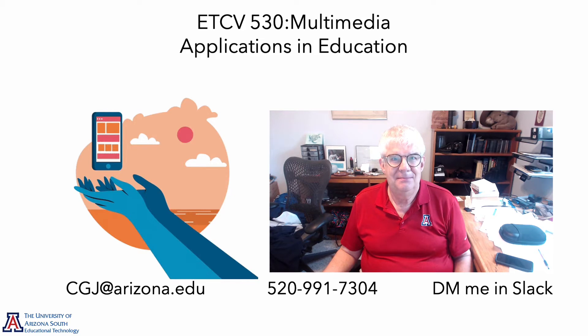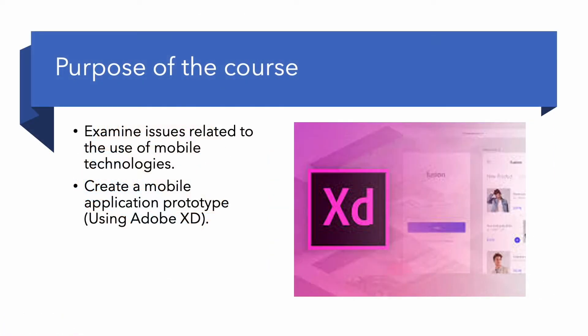Let's take a look at the course. How can you design mobile learning? How can you use principles such as universal design for learning? We'll get into all of that as you go through some readings and watch some videos, and we'll do some discussions in our weekly meetings on these topics. But the main focus of the course is for you to actually develop a mobile application prototype, and we'll be doing this using a tool called Adobe XD. You have access to Adobe XD through Creative Cloud — instructions are in the course, but if you have problems, let me know.